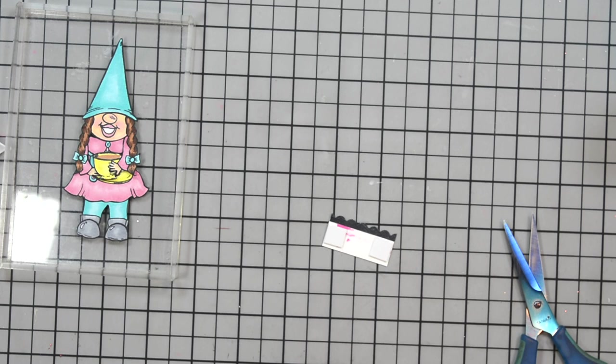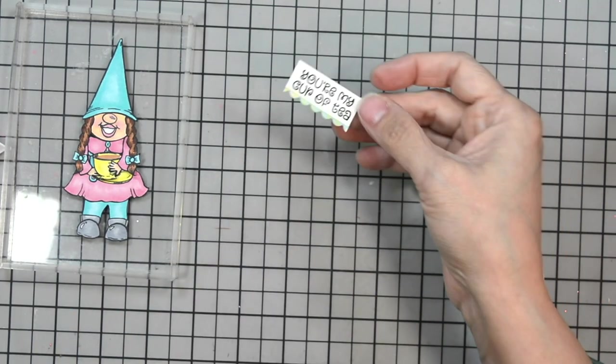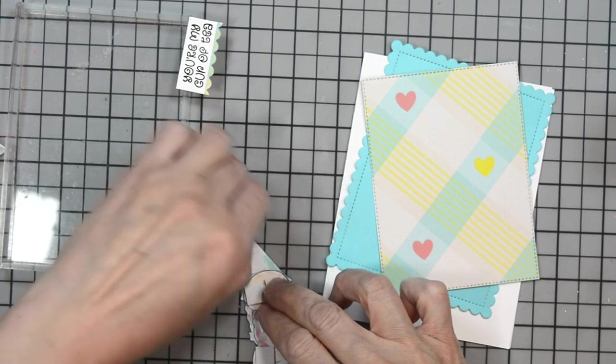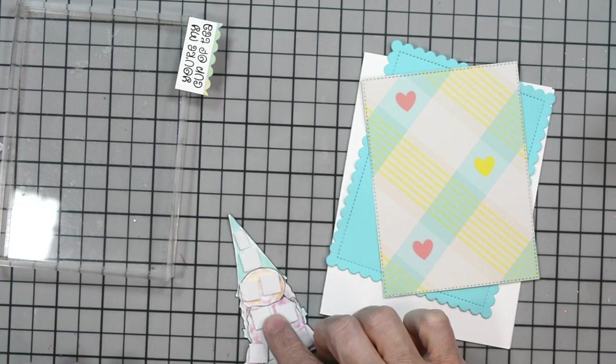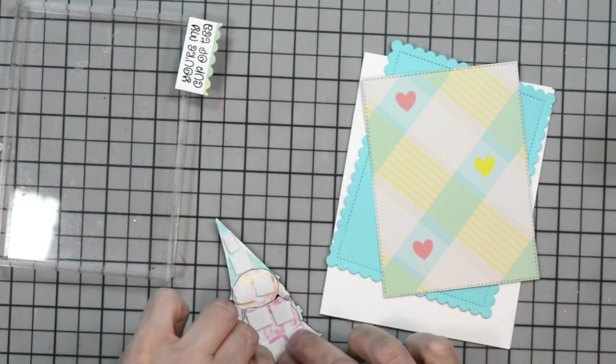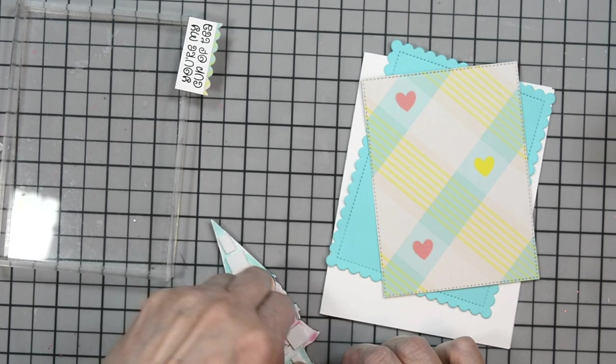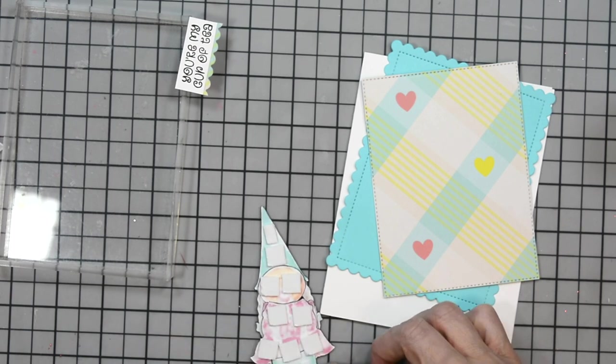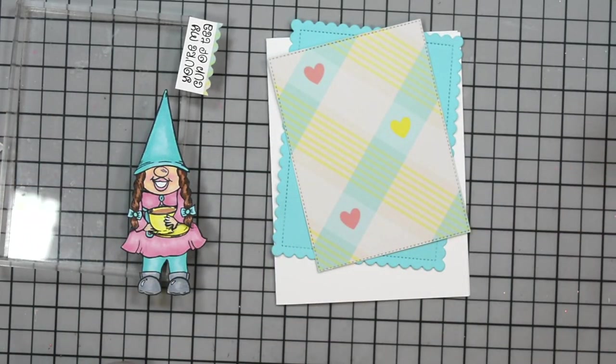I'm putting foam adhesive on the back of that. Sorry, I'm off screen—I didn't realize. I have a monitor I use for filming and on my monitor I was on screen. Now I'm going to remove all the backing of my foam tabs from my gnome. I've already done that for my sentiment, so when we start adhering everything together it'll go quickly.